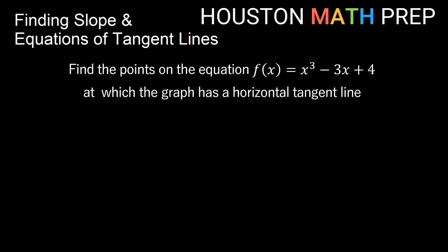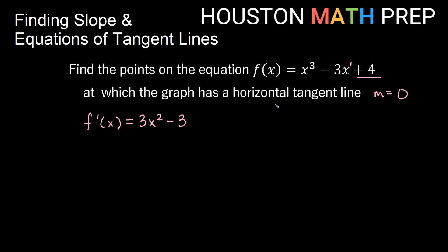Let's do one more example with tangent lines, this time finding places where we have a horizontal tangent line. We have f(x) = x³ - 3x + 4 and want to find points on this graph with a horizontal tangent. A horizontal tangent line means slope equals 0. First, let's find f'(x) using power rules: the derivative of x³ brings the 3 out front giving 3x², the derivative of -3x gives -3, and the constant's derivative is 0. So f'(x) = 3x² - 3.